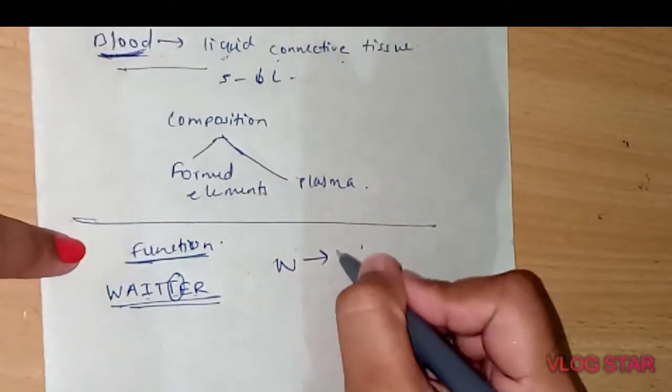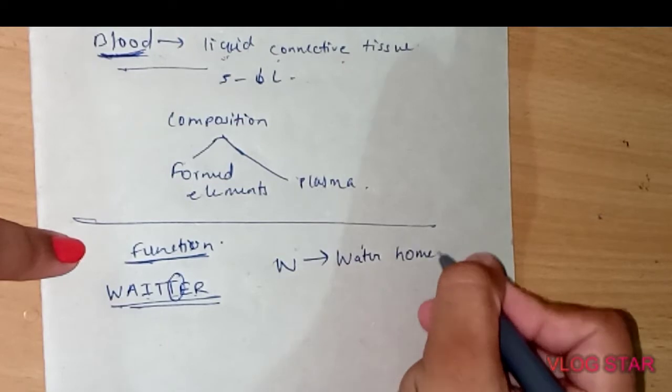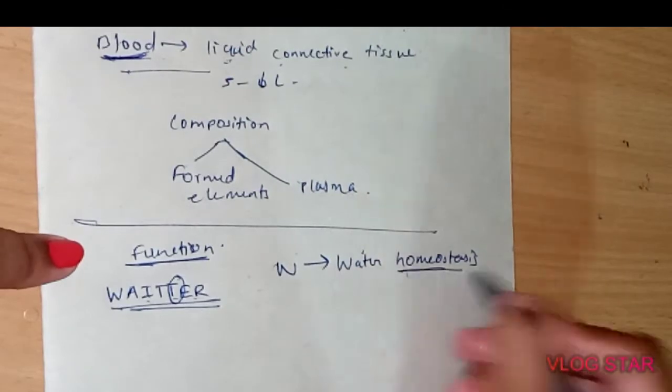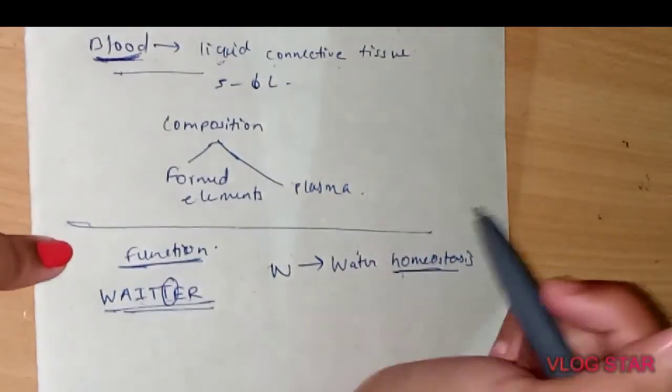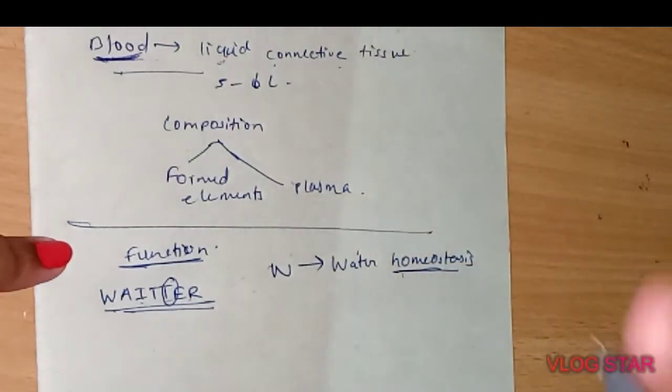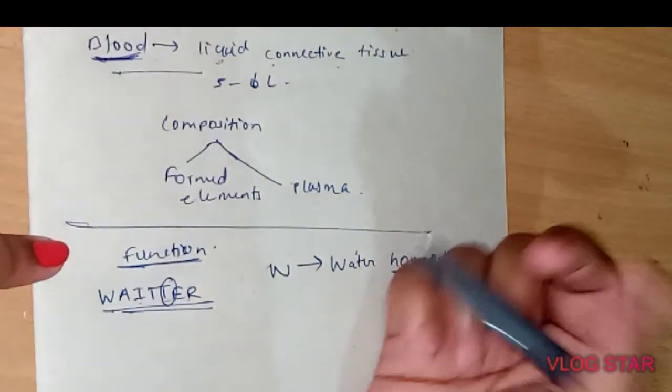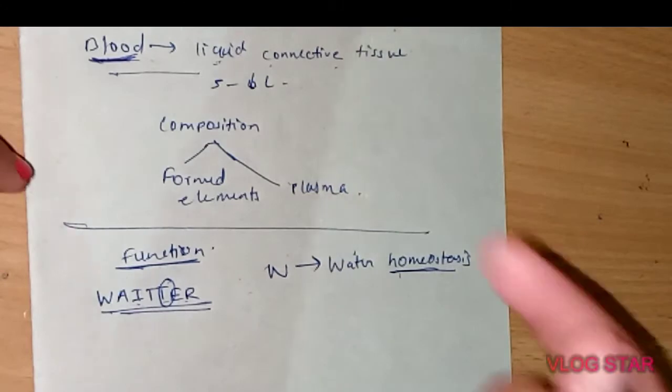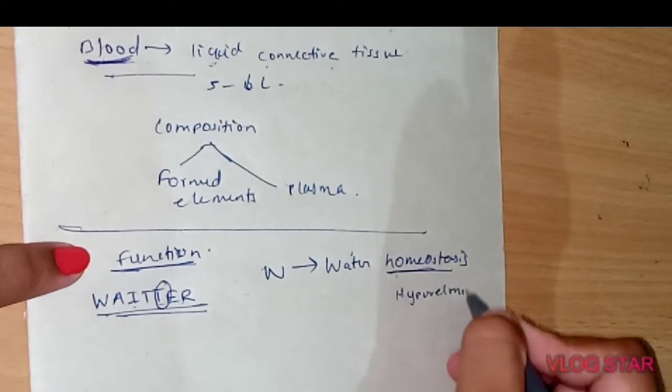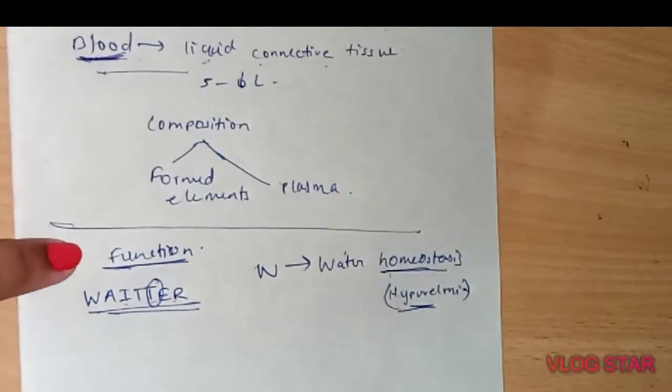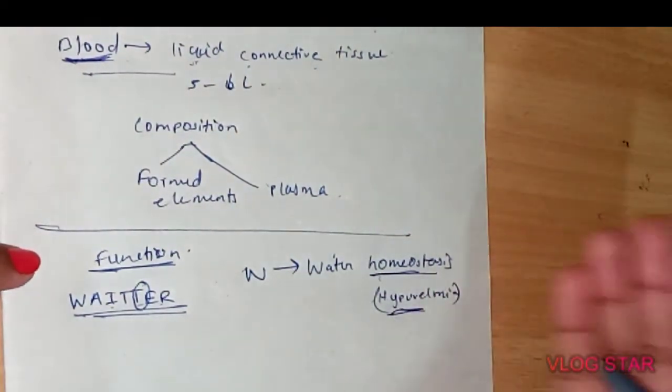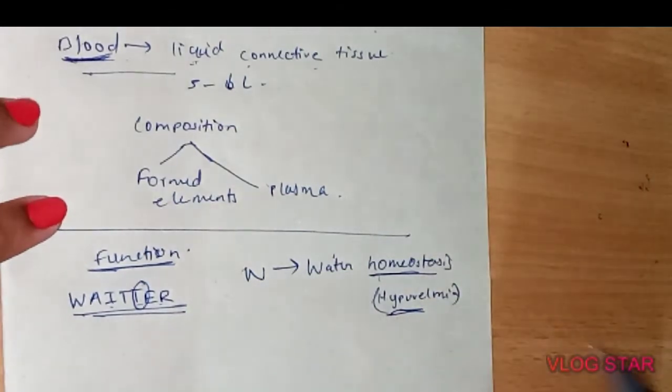W means water homeostasis. What does water homeostasis mean? It is balance. Balance of water balance is mainly the function of blood. Normally, loss of water from our body results in decreased blood volume, which is called hypovolemia. This is normally a short note asked, so try to remember this. Hypovolemia is excessive loss of water from the body resulting in loss of blood.